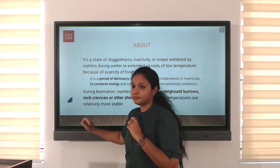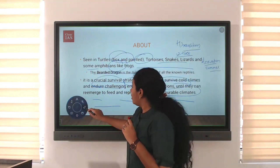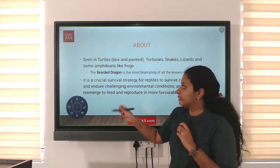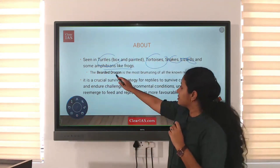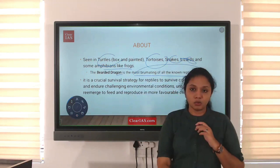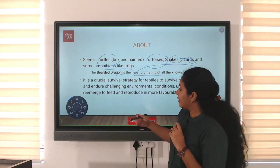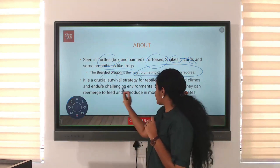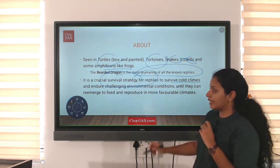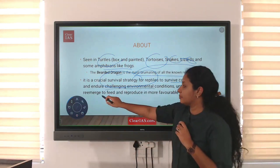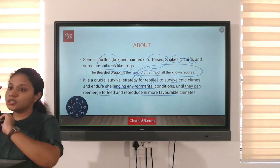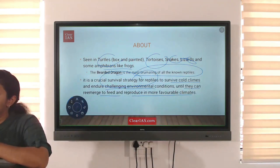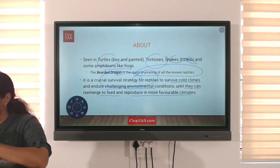When reptiles are unable to tolerate lower temperatures or the winter season, they go into brumation. It is seen in turtles, tortoises, snakes, lizards, and some amphibians like frogs. The bearded dragon is the most well-known brumating reptile. Brumation is a crucial survival strategy for reptiles to survive cold climates and challenging environmental conditions until they emerge to feed and reproduce in favorable conditions.